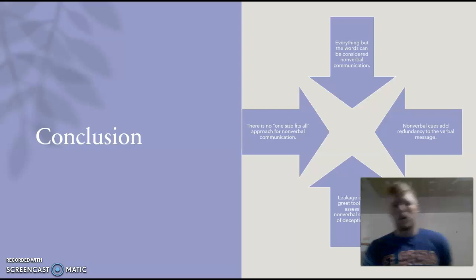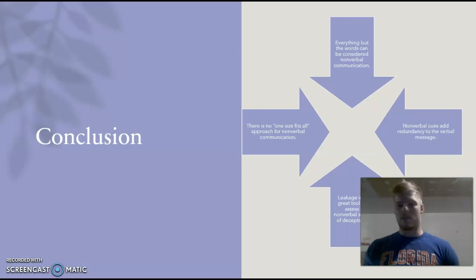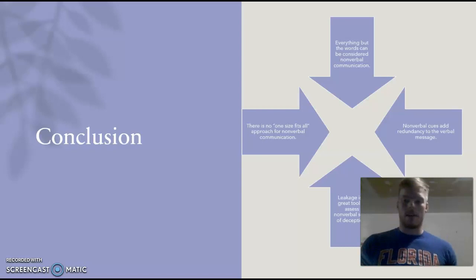By far, voice is the easiest tool for detecting deception. To close, a few main points to recap: the physical words themselves can be considered nonverbal communication — it's a big, complicated, complex ball of dialogue. Nonverbal cues add redundancy to the verbal message; they give meaning and impact, like that little salt on whatever you're cooking. To catch deceitful actions, we use assessment tools of leakage — movement, voice, artifacts, and personal space.